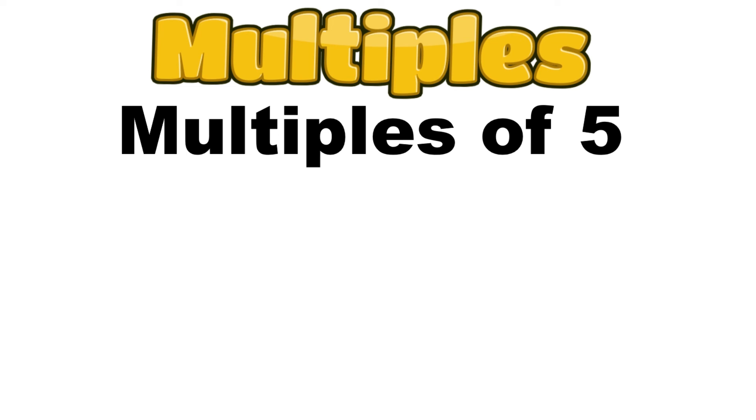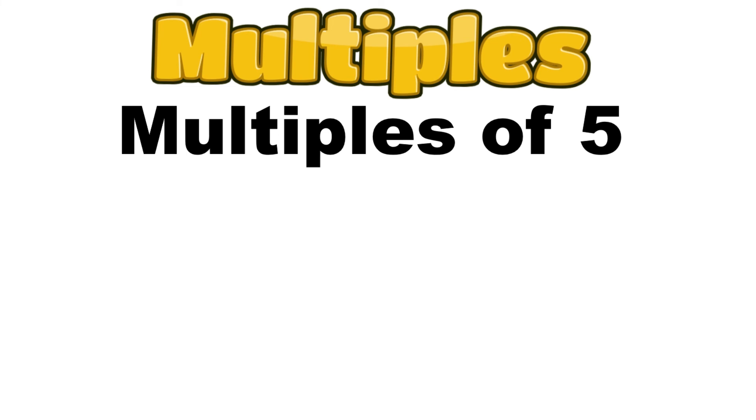The same rule works with the 5. Start at 5 and skip count, adding 5 each time. All the numbers you say in this case are considered multiples of 5.